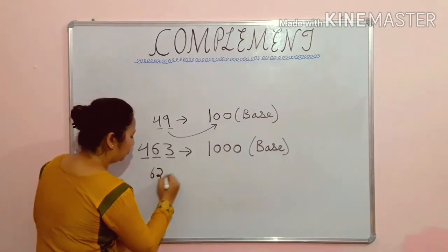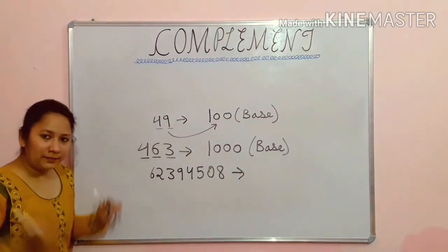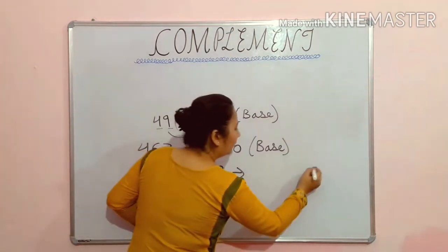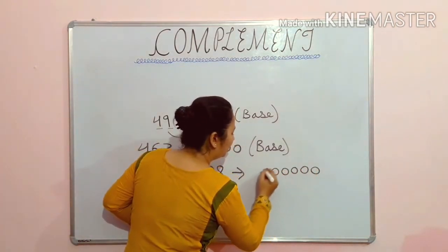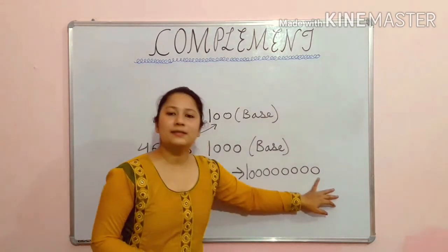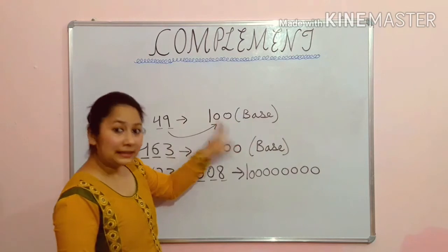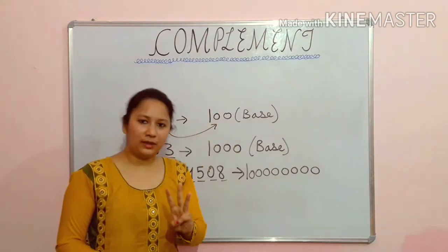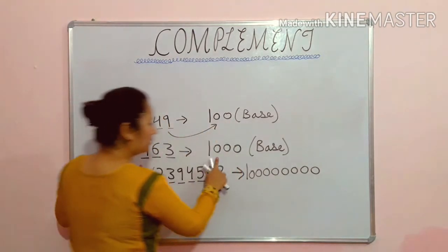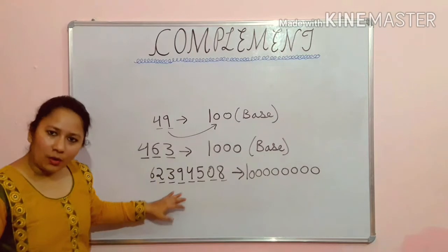Like if your number is 62,394,508 — a big number — count the digits: 1, 2, 3, 4, 5, 6, 7, 8. So your base will have 8 zeros with 1 in front. Remember: number of digits equals number of zeros in the base. Don't count the 1 itself. For 2 digits — 2 zeros. For 3 digits — 3 zeros. For 8 digits — 8 zeros. Now students, you can find the base of any number.